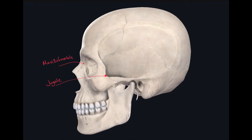The next craniometric point is near the maxillofrontale and it's called the dacrion. The dacrion is located at the medial border of the orbit where the lacrimomaxillary suture and the frontal bone intersect. It's going to be right here. And again that's called the dacrion.